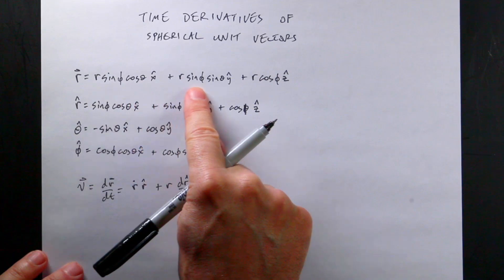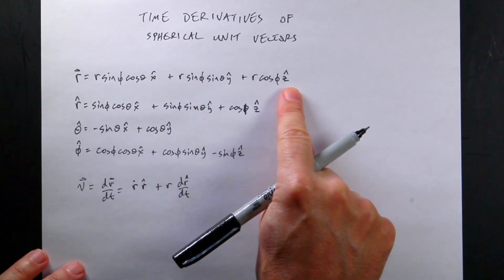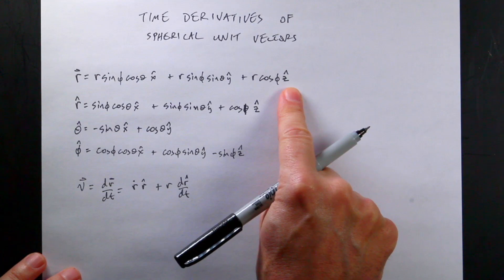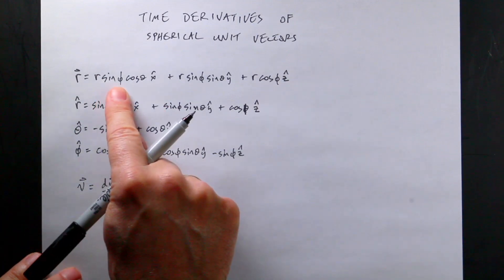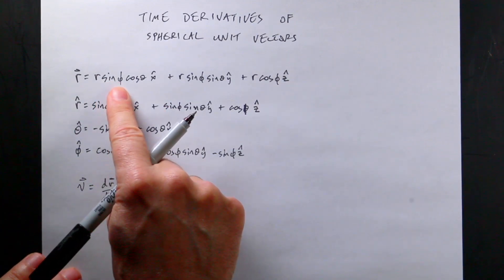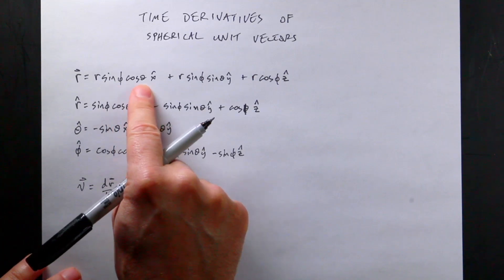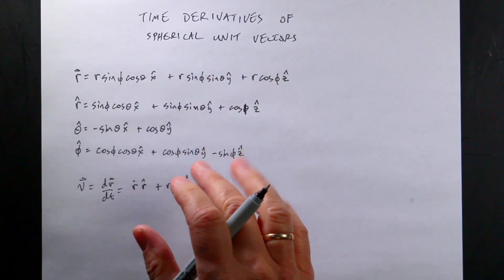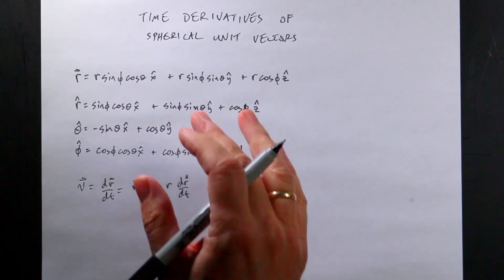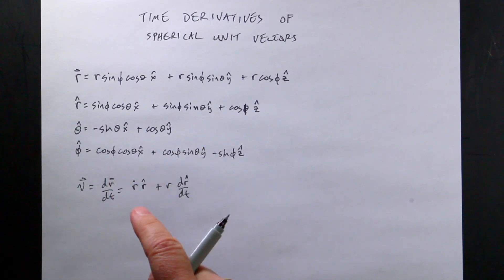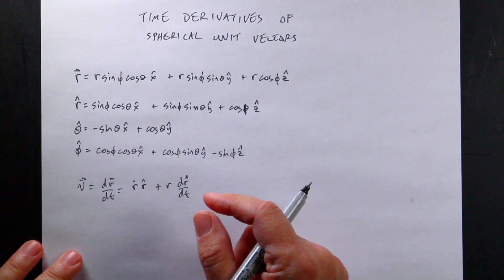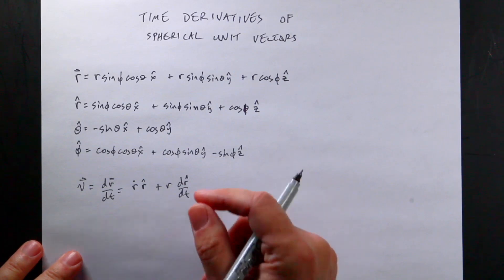Here's my r vector in terms of Cartesian coordinates. One note: I'm measuring phi from the z-axis and theta is in the x-y plane. Some people switch those two — if you're one of those people, all those thetas and phis might look backwards. But it's really about the process.